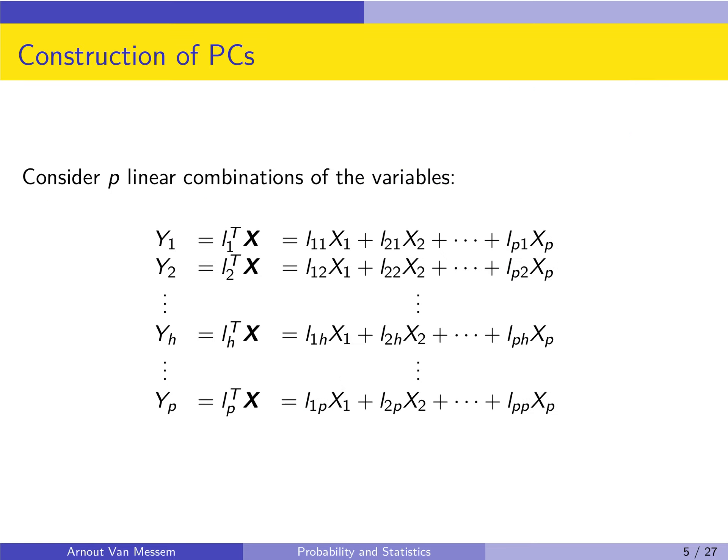To construct the principal components, we start with linear combinations of the variables. We will consider p linear combinations — the same number as we have variables. So y1, our first linear combination, is l11 times x1 plus l21 times x2 plus ... plus lp1 times xp, and we do this for y1 up to yp. We start off with p new variables, and then later we will see how to reduce this number to something smaller than p.